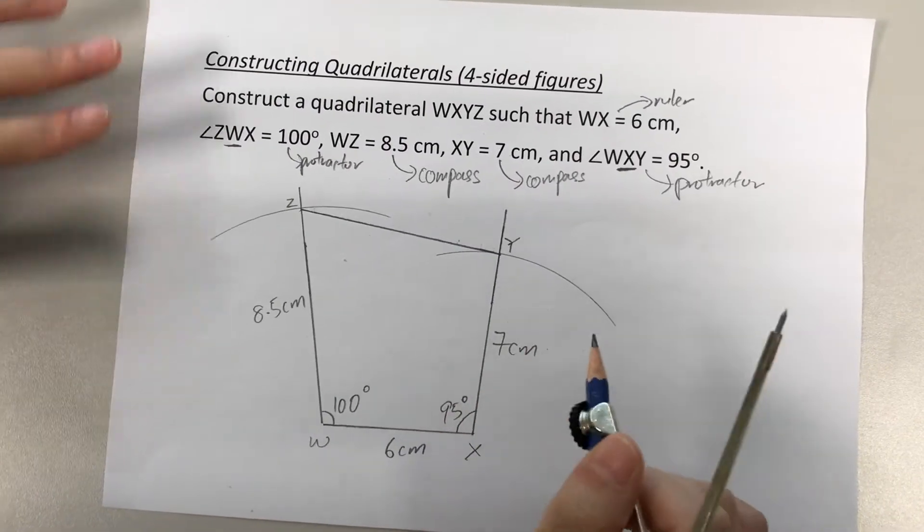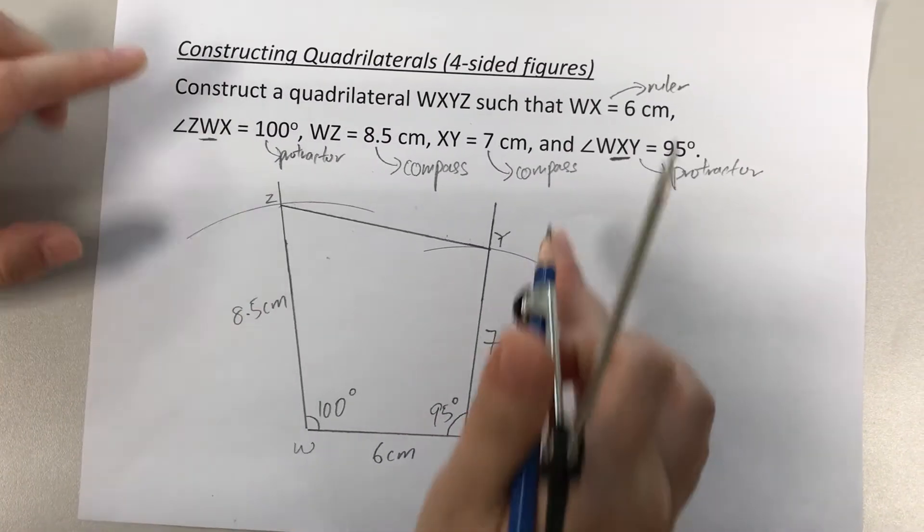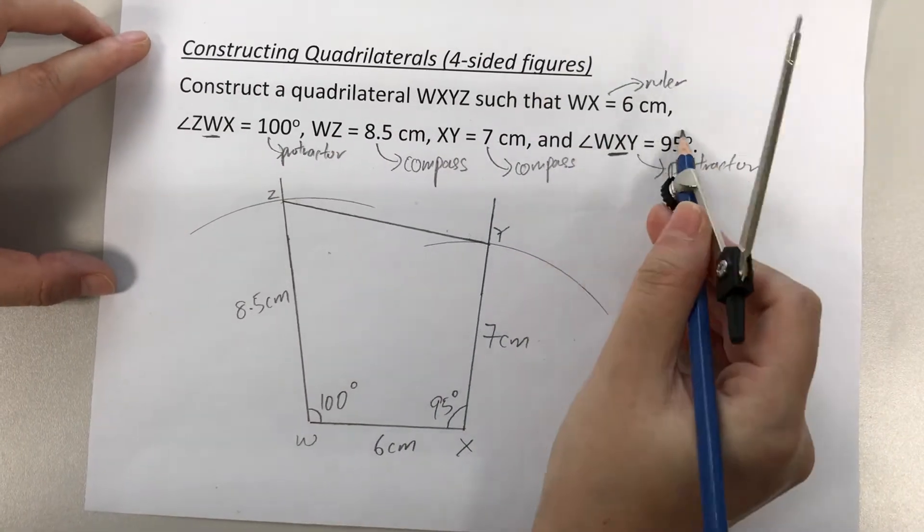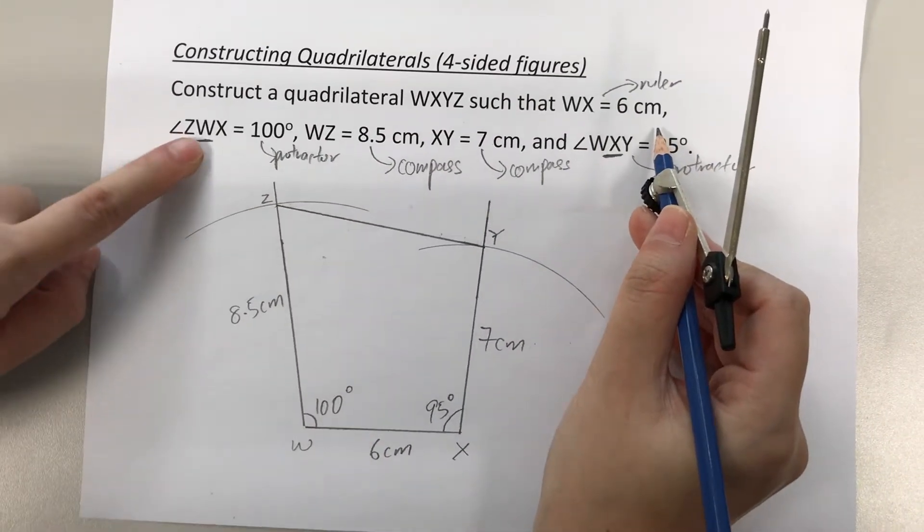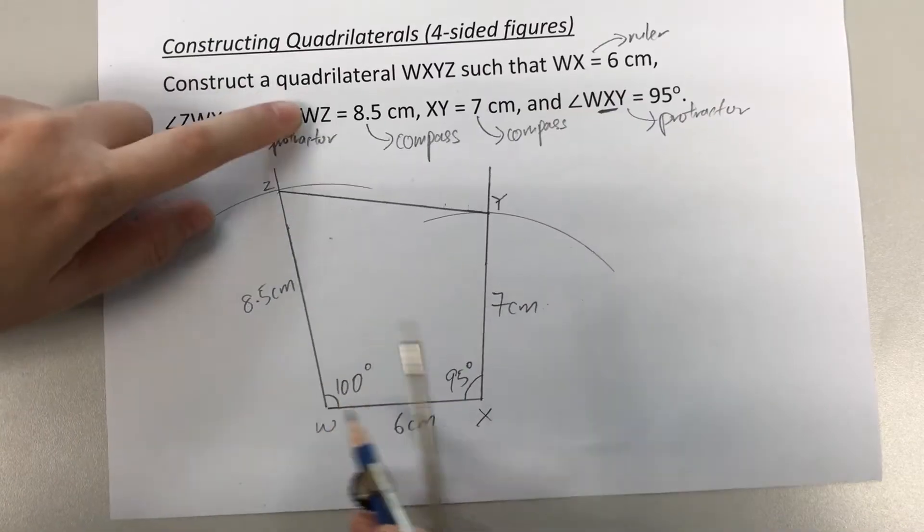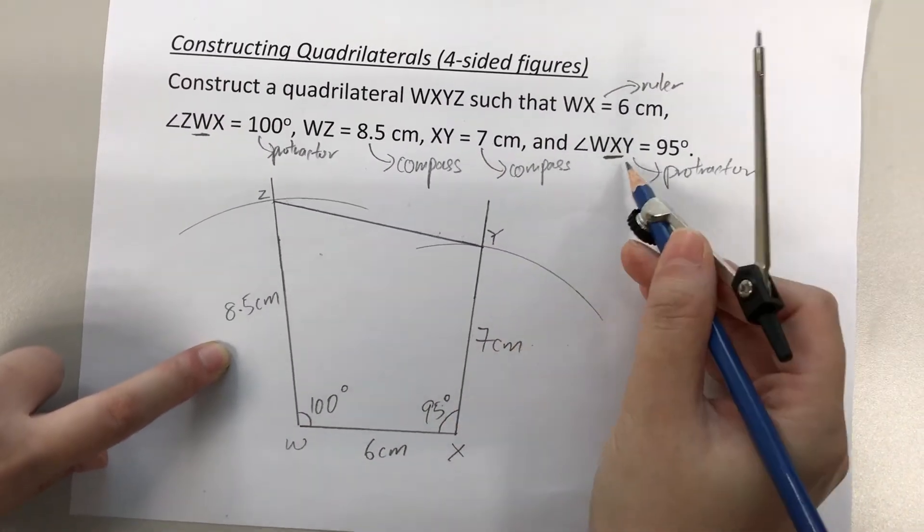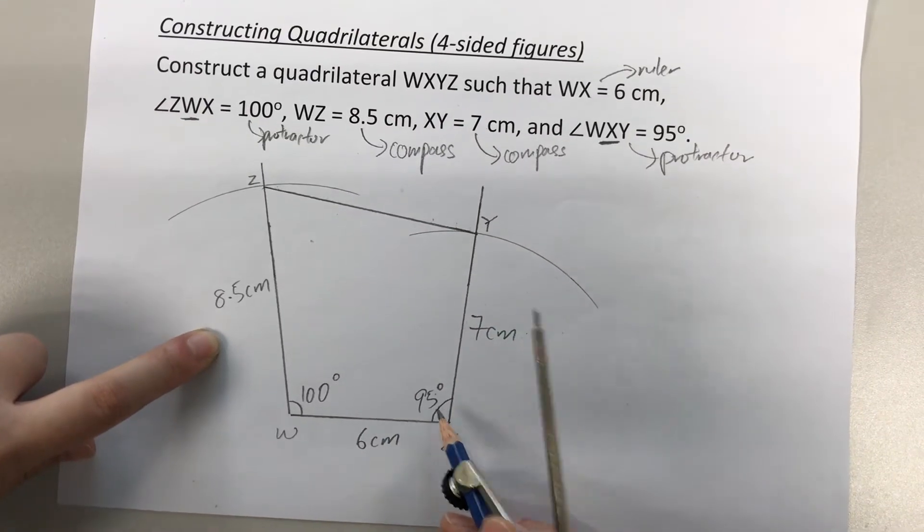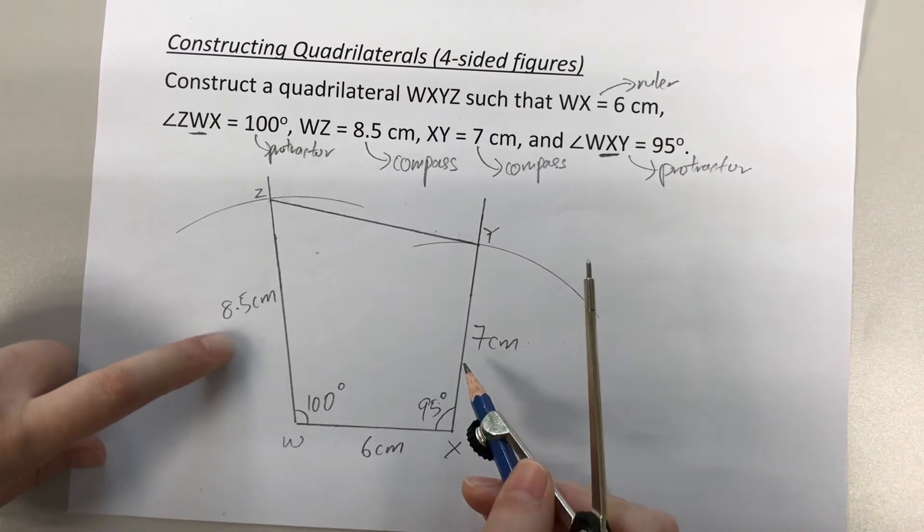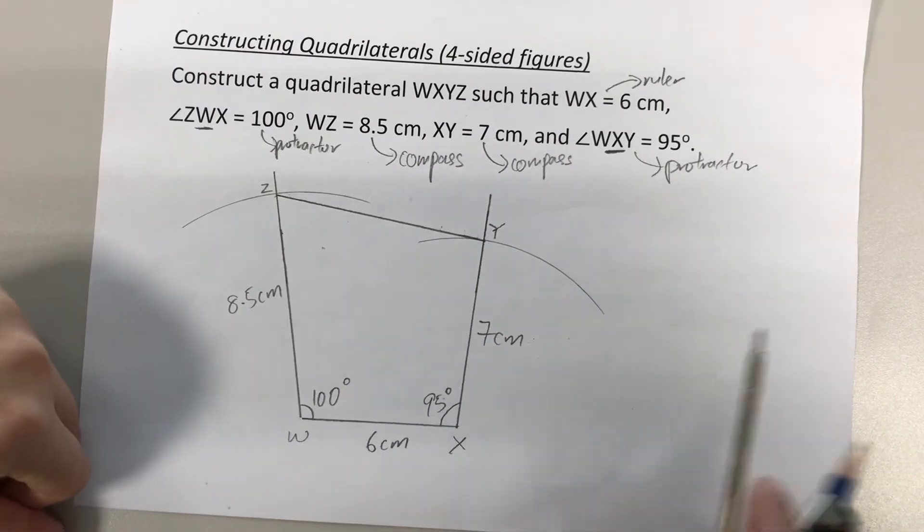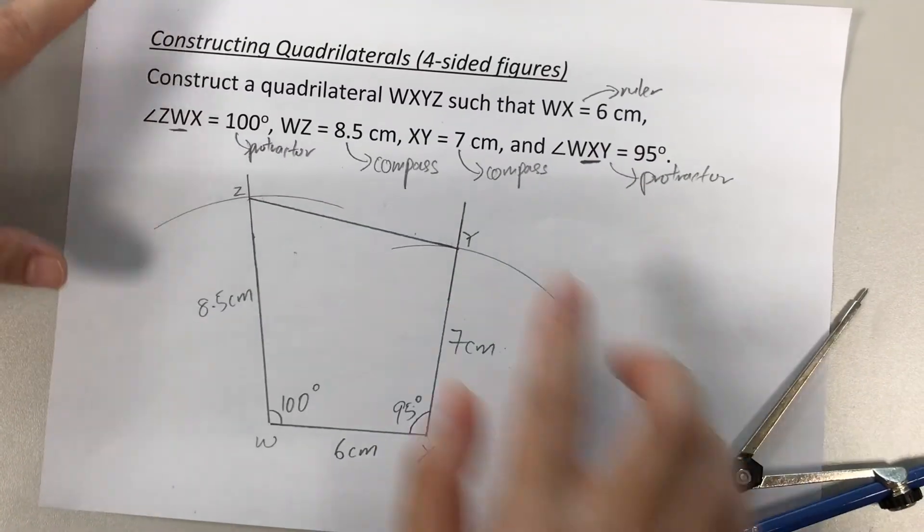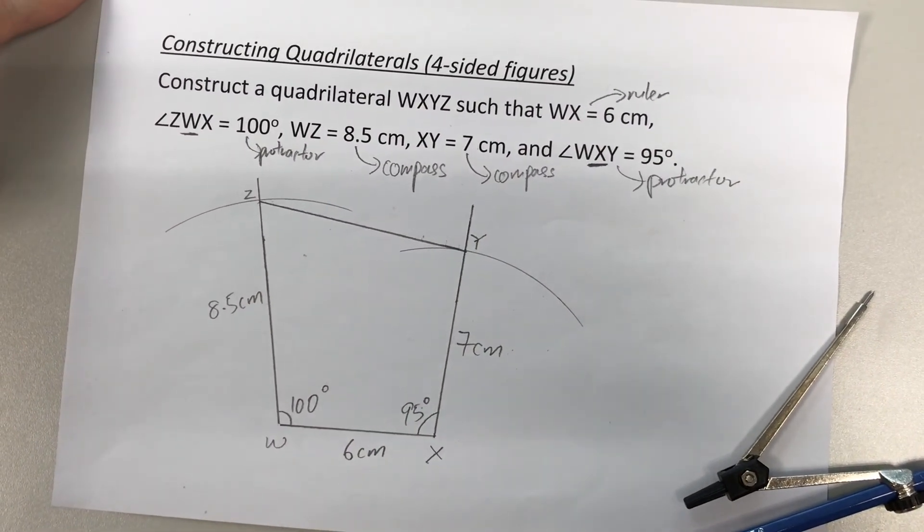Do a quick check that your curves are not erased and that all the labels are given. W, X, 6 cm. Angle W, 100. W, Z, 8.5. X, Y, 7. Angle X, 95 degrees. Okay, so we have labeled everything. So that would be how you would draw a quadrilateral given information in the question. Thank you.